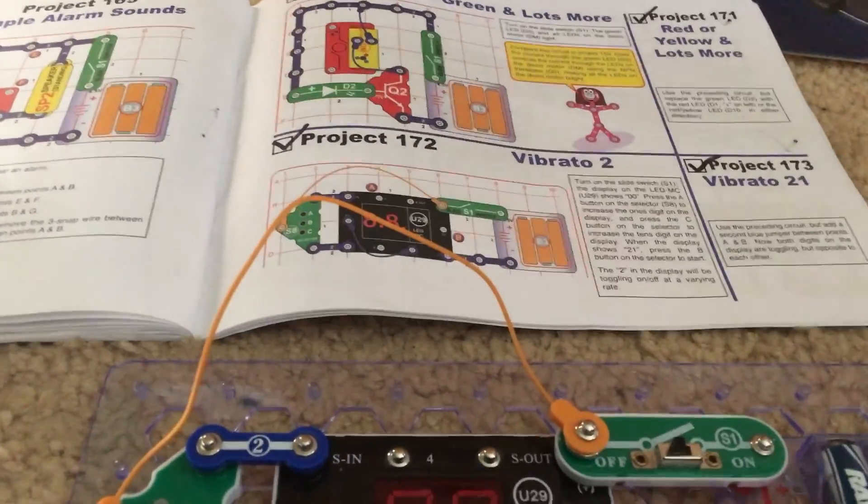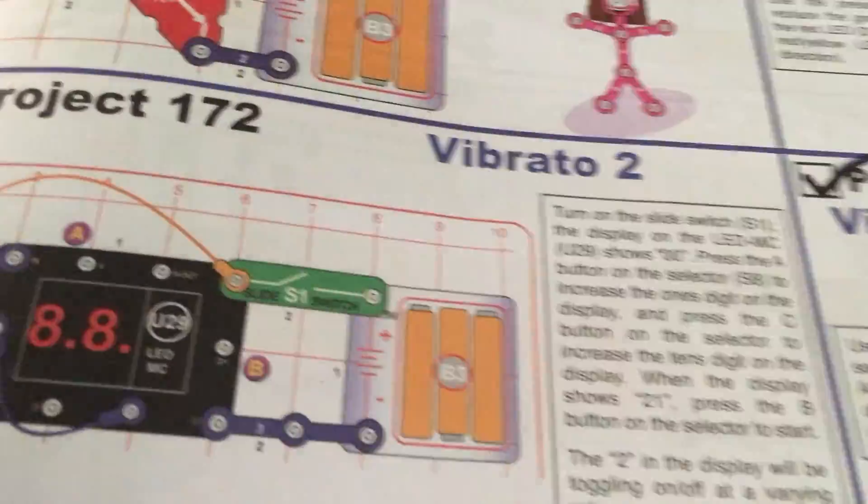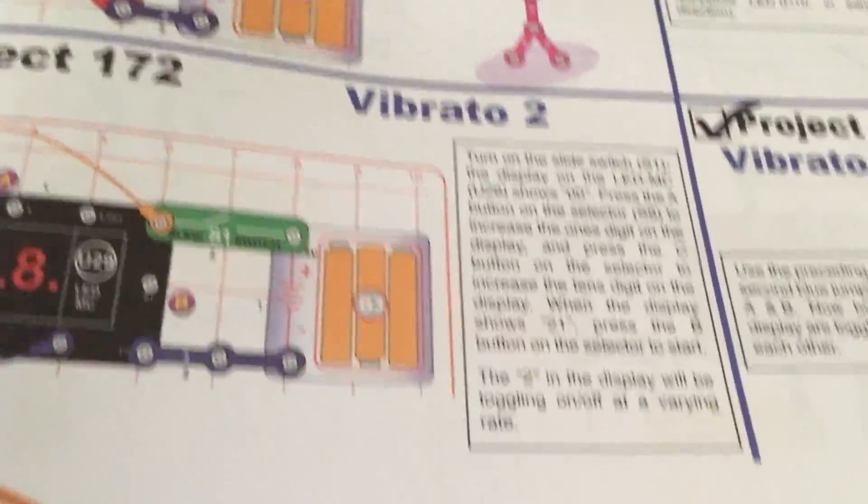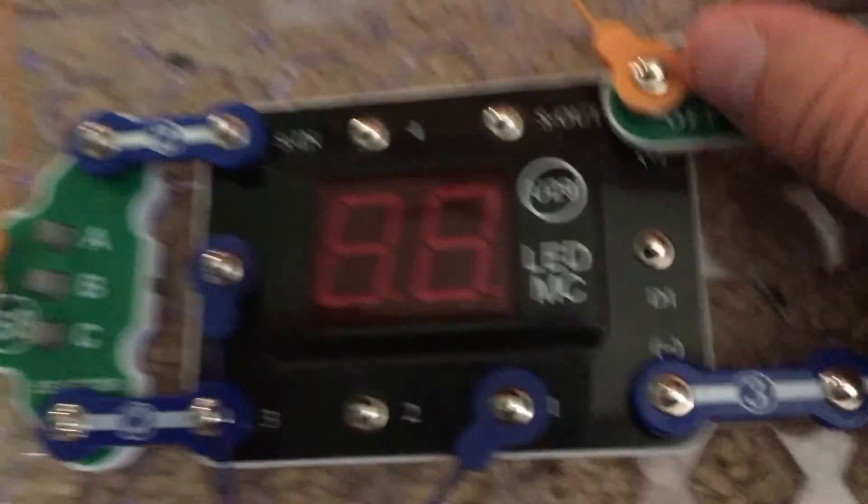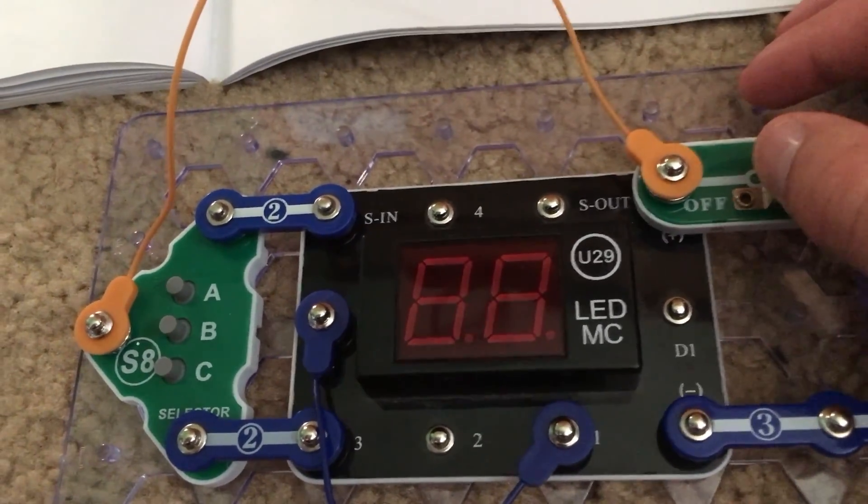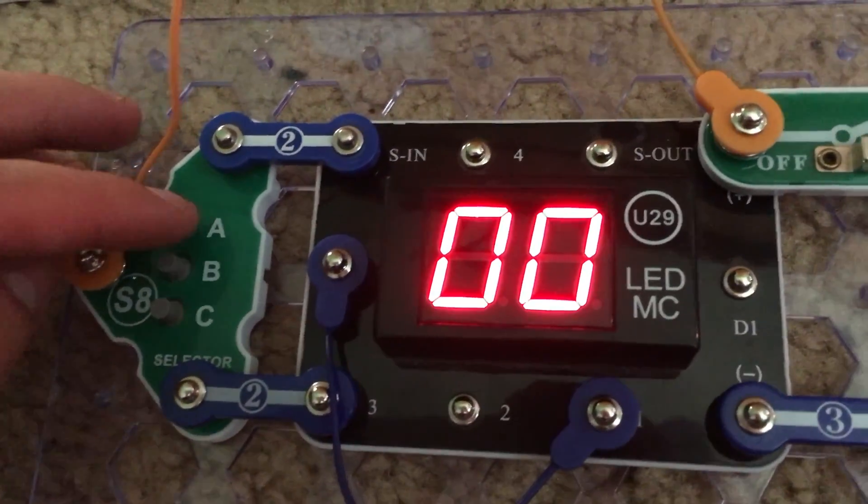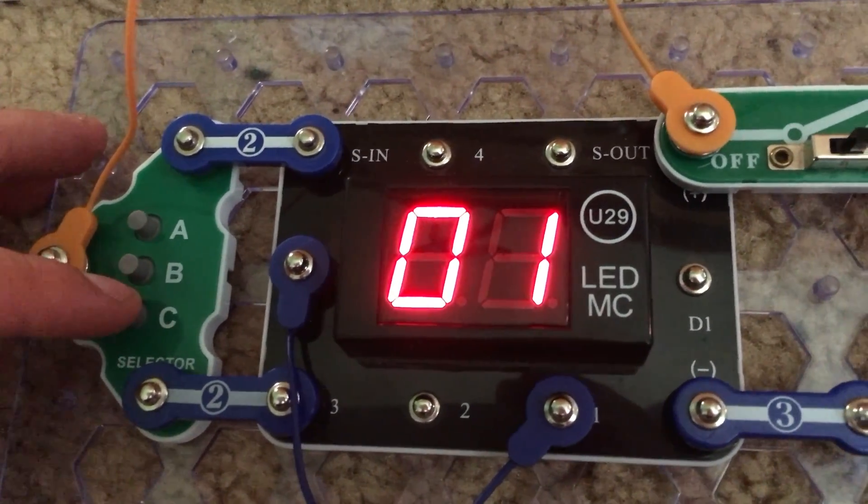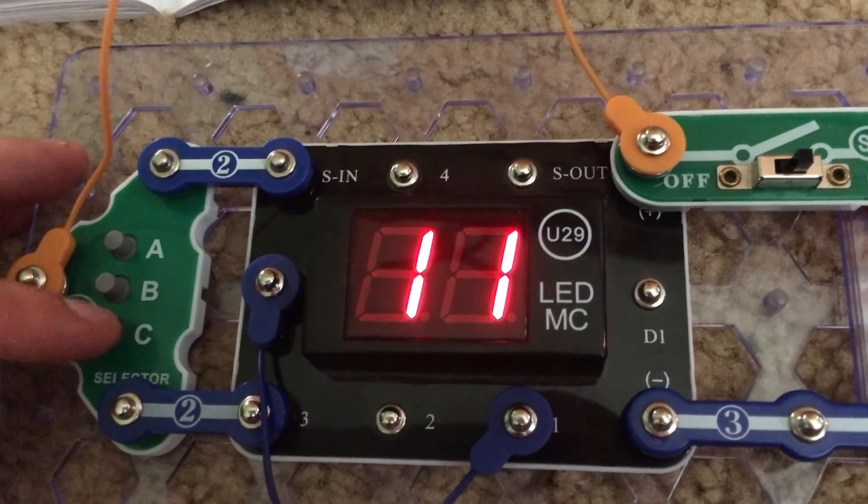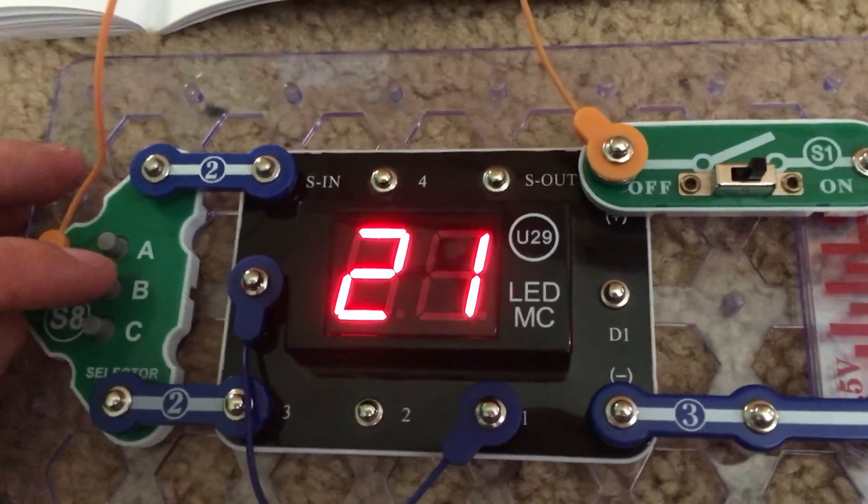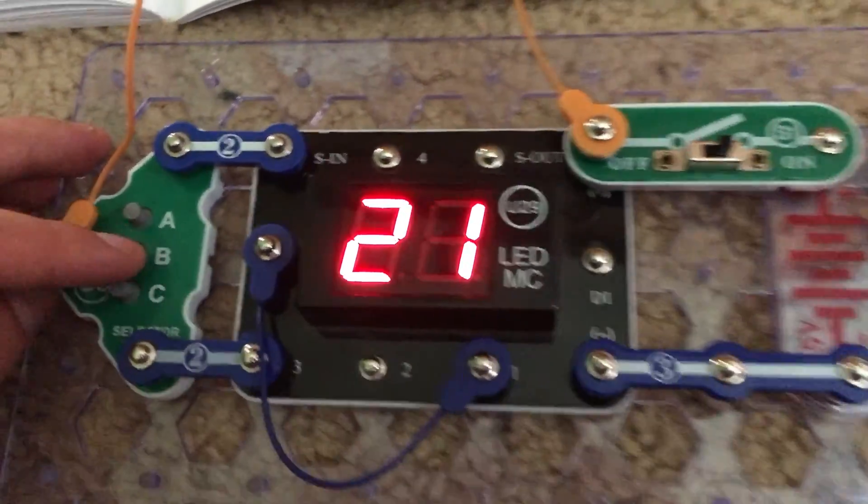Project 172 is called Vibredo 2. For this circuit we have the U29 display and S8 module. We are going to turn on the slide switch and hit the A and C button so that the display says 21 and then hit the B button.